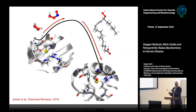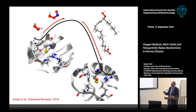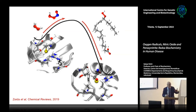Here is a structural biology cartoon showing the active site of a peroxiredoxin. This is the peroxidatic thiol reacting with hydrogen peroxide, peroxynitrite, or a lipid hydroperoxide. Any of these can react with the thiol leading to the formation of the sulfenic acid derivative and then the reduction of hydrogen peroxide to water, peroxynitrite to nitrite, or the lipid hydroperoxide to the lipid alcohol.